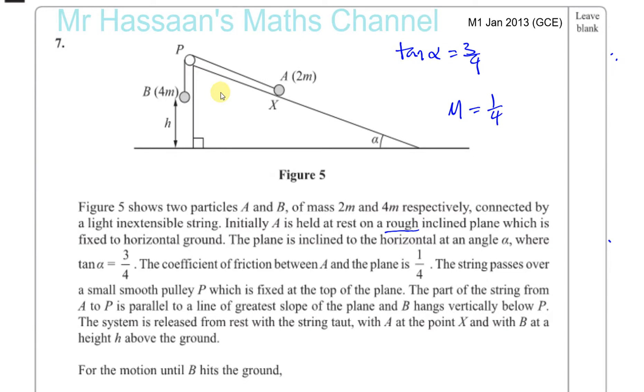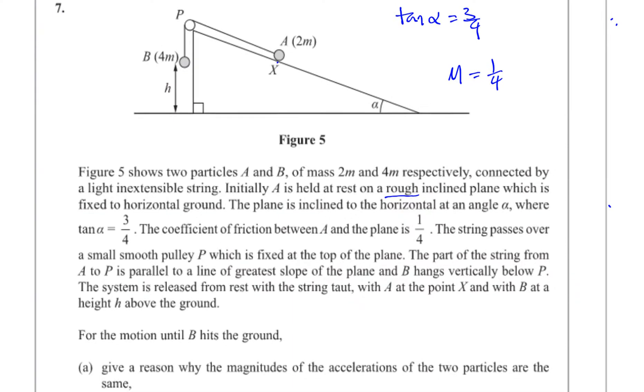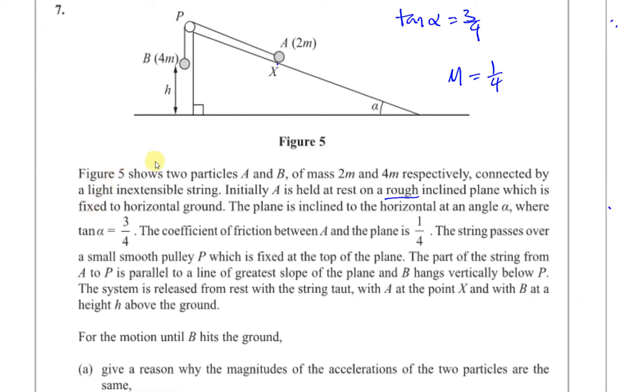The string is released from rest, so initially it's not moving, with the string taut, so the string is tight at the point when it's released, it's not slack. With A at the point X and B at a height H above the ground, for the motion until B hits the ground, give a reason why the magnitude of the accelerations of the two particles are the same.